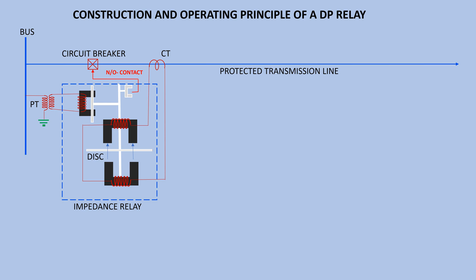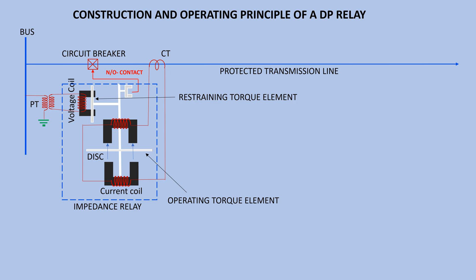Distance protection relay is a double actuating relay with one of its coils energized by voltage supplied by PT and the other coil energized by current supplied by CT. The current element produces an operating torque while the voltage element causes a restraining torque.